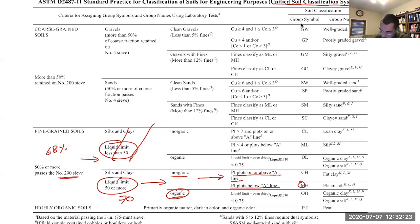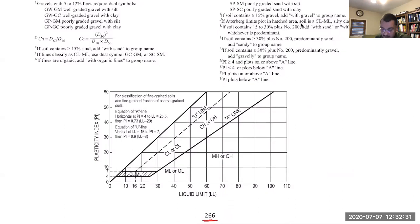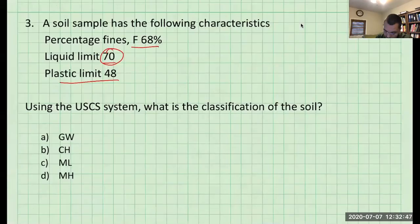It's either CH, clay high plasticity, or MH, silt high plasticity. What is this chart that they're referring to? It's the Casagrande chart and it can be easily used to classify soils.